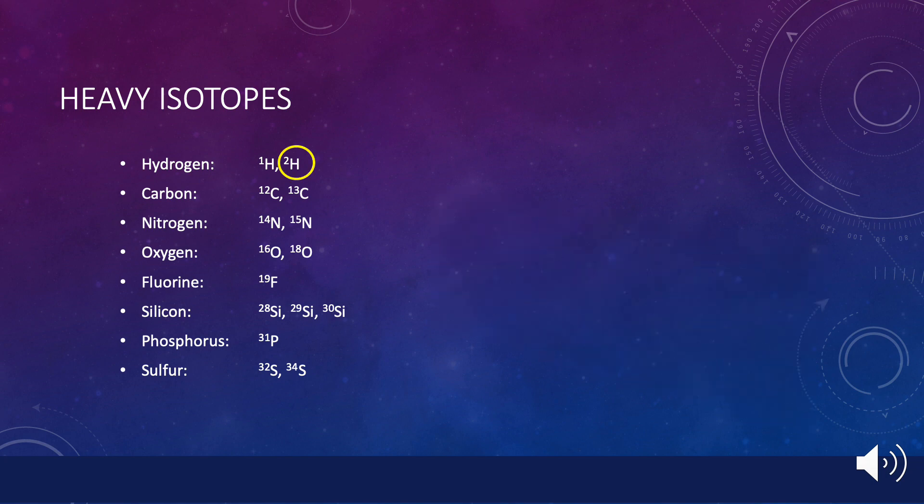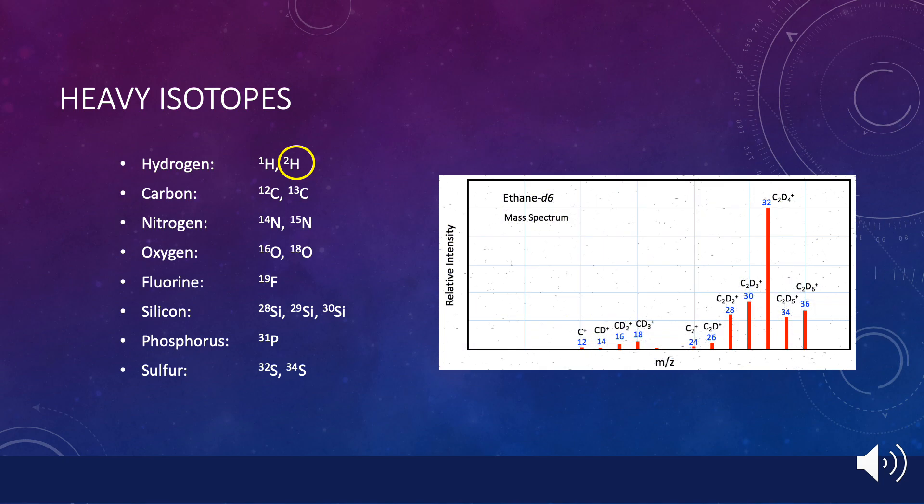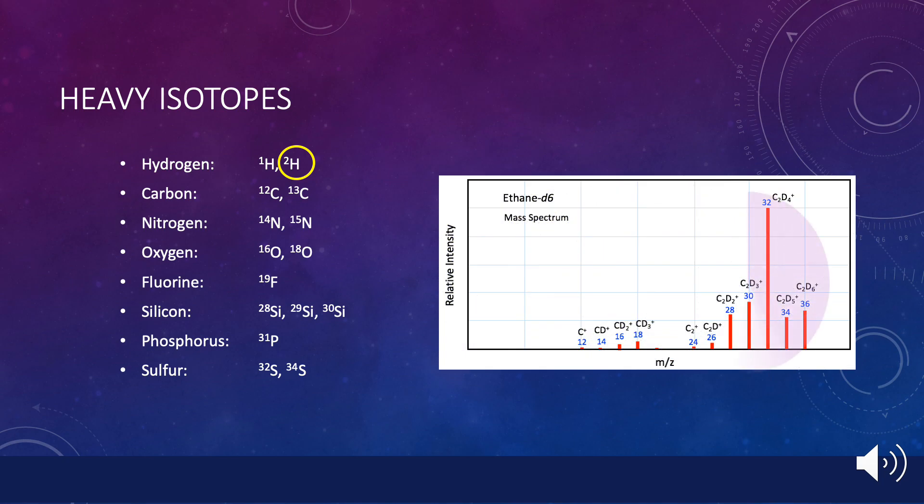Just as we saw in the propene mass spectrum, molecules containing deuterium will display a series of peaks, but now spaced by two mass units, as shown in this example. This spectrum also identifies the particular mass fragment ion that gives rise to each of the peaks observed.